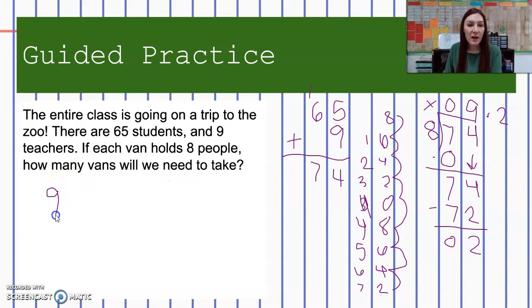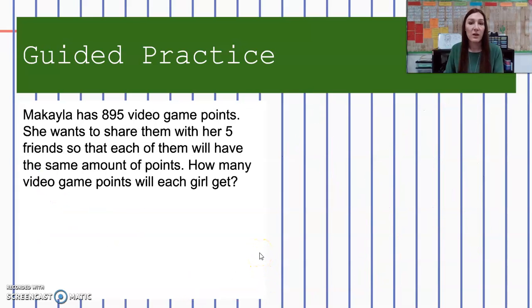So what do I do with those two people? Do they not get to go? Do we put them on top of the van? We have to decide what we need to do. Since we can't leave them behind, it looks like we're going to have to round our remainder. We're going to have to add one more to our quotient. So instead of taking nine vans, we're going to need to take 10 vans, even though that 10th van will only have two people in it instead of eight.